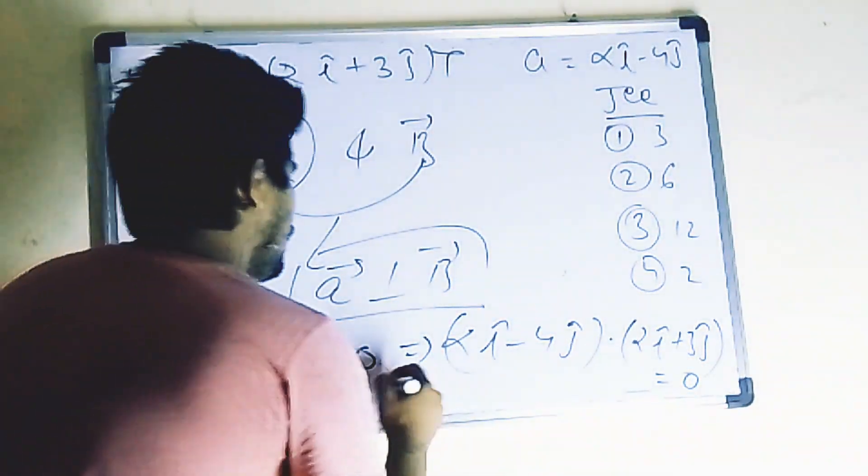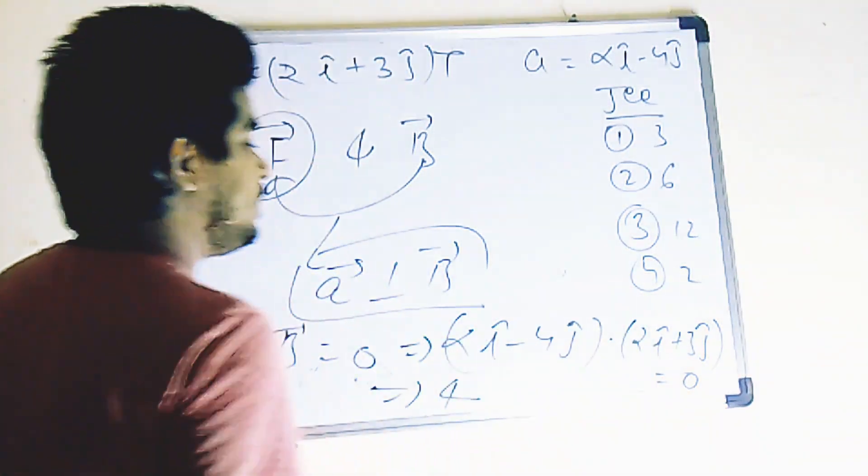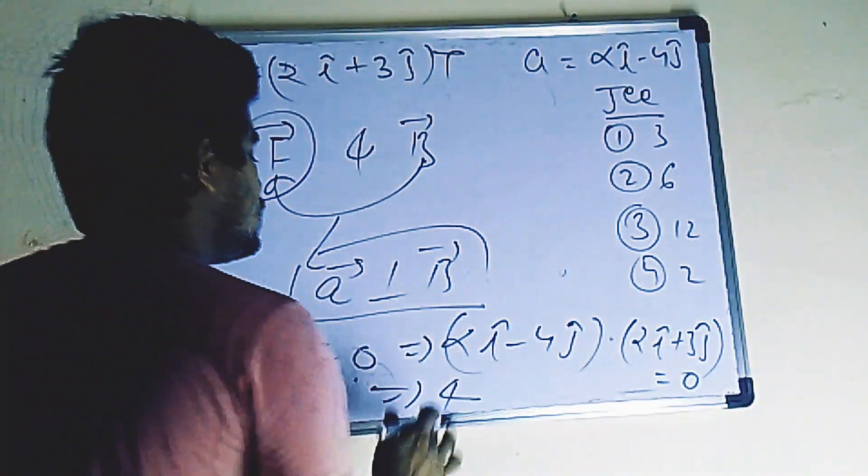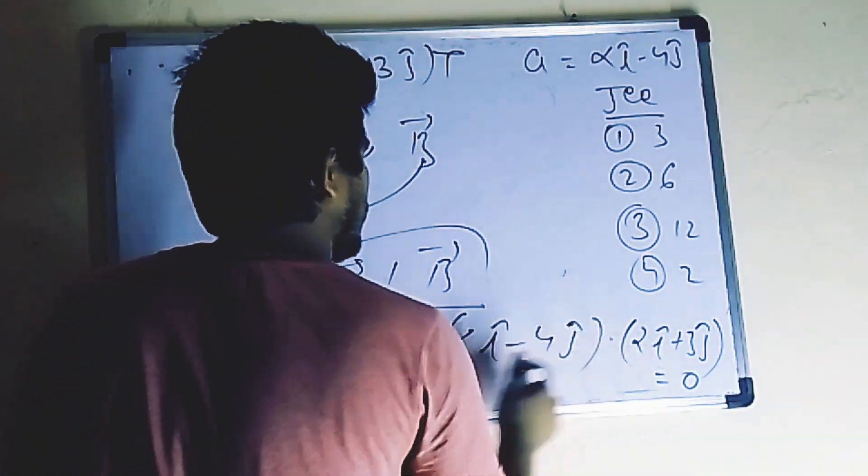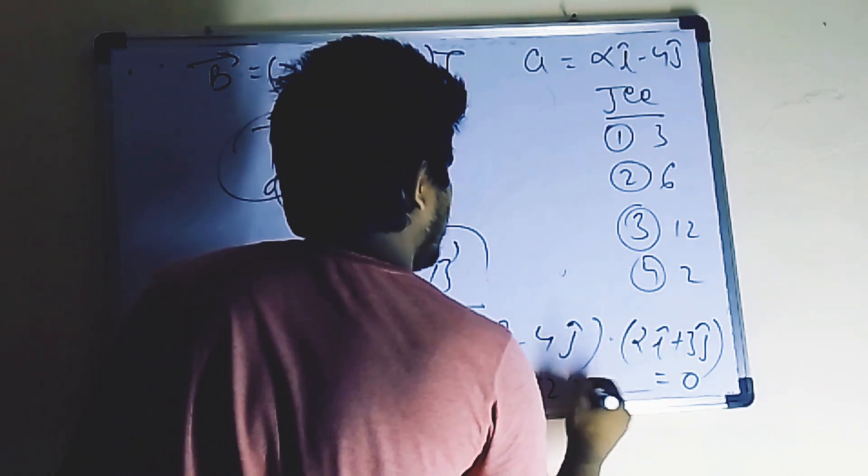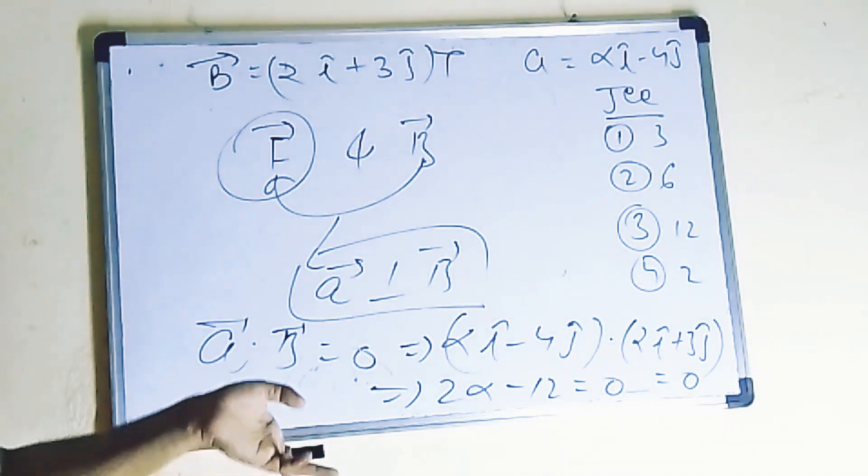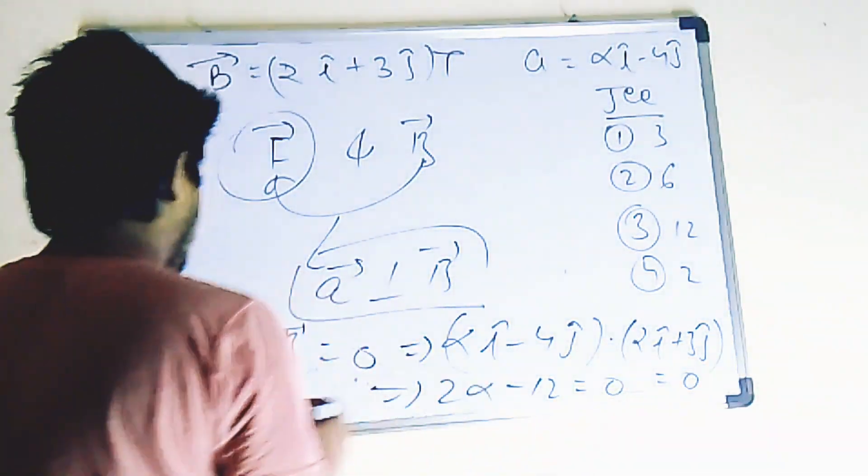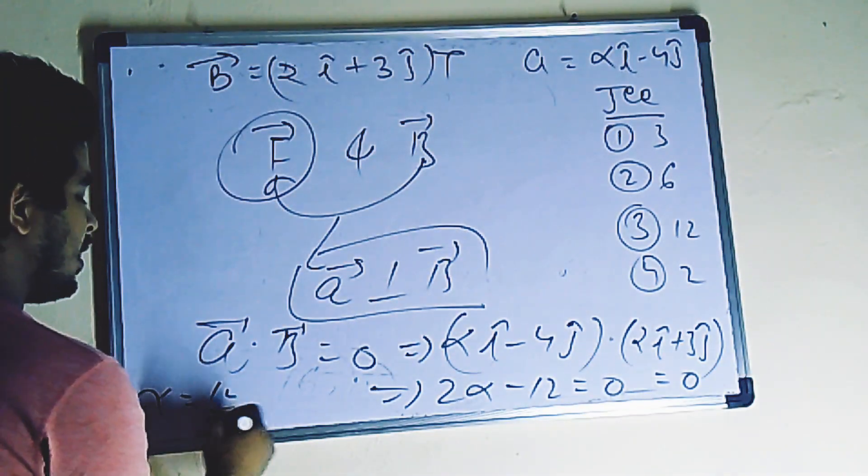2 into... no, this is alpha. So 2 into alpha: 2 alpha, minus 4 into 3, minus 12 equal to zero. So 2 alpha minus 12 equal to zero. So what is alpha? 12 by 2, so 6.